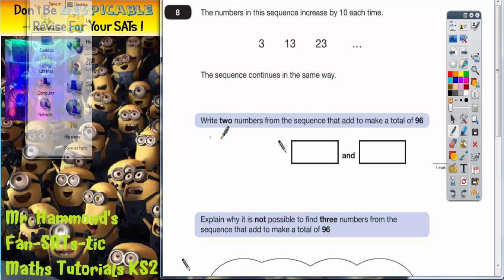What we've got to do is write two numbers from the sequence that add to make a total of 96. You can see that any two of these numbers from the sequence we've got so far would be far too small and wouldn't add up to 96.